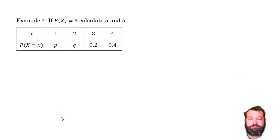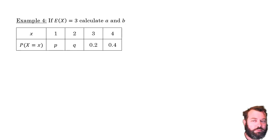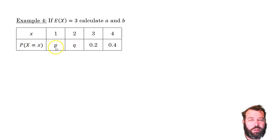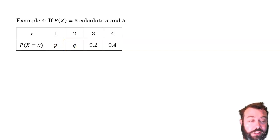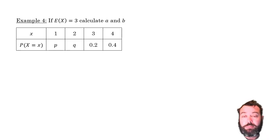Here's another example. If the expected value is equal to 3, calculate P and Q. This is a common enough HSC question — it could certainly be an exam question just like this. There are two unknowns and two things we know.